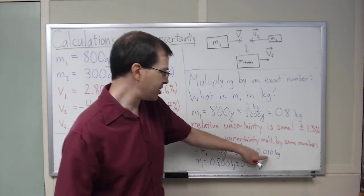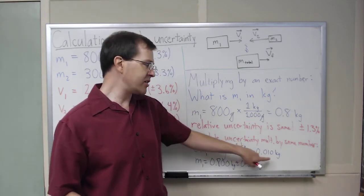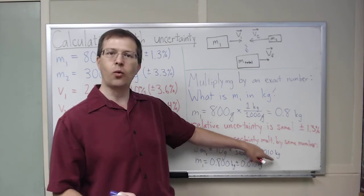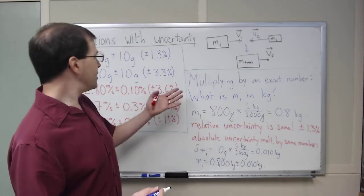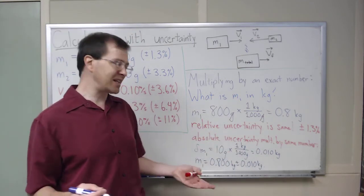As usual, I kept two sig figs in the uncertainty if the first sig fig is a 1 or a 2. That's my story. That's how you multiply by an exact number with uncertainties. Relative error is the same.